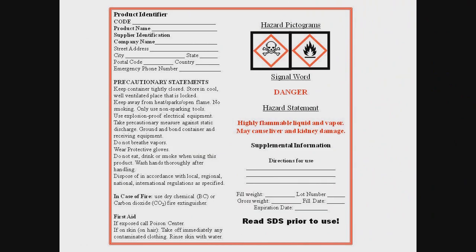Here is an example of the labels you may see under the new GHS rules. There is no standard format required for the GHS label, so the information may or may not be in the order presented here. You can anticipate that most labels will look different from each other. The thing you need to keep in mind is that even though labels will look different, the information required on the label is the same and you should understand how to read and use the data presented.